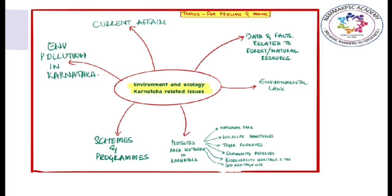Thirdly, under the Protected Area Network in Karnataka, you must have a brief idea about national parks, wildlife sanctuaries, tiger reserves, community reserves, biodiversity heritage sites and geo-heritage sites of Karnataka. Also, you must have knowledge about schemes and programs launched with respect to environment by the government of Karnataka, as well as knowledge about environment pollution in Karnataka and steps taken by the government to mitigate the effects of pollution. And lastly, you must have a brief knowledge about current affairs relating to environment and ecology with respect to the state of Karnataka.